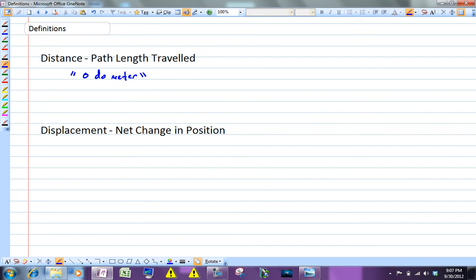Displacement, on the other hand, is your net change in position. It's where you end up compared to where you started. Mathematically, another way of saying that is that displacement is the change in position, so it's going to be your final position minus your initial position.